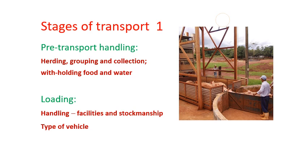Now we will see the stages of transport. There are two stages. In the first stage there is pre-transport handling — herding or collecting the animals, then grouping, and withholding food and water. Then comes loading into the transport vehicle, which requires handling facilities, human stockmanship, and depends on the type of vehicle.